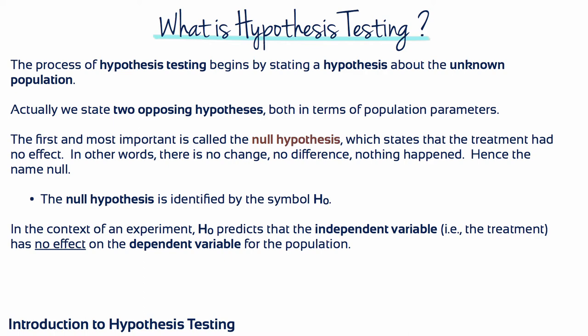The null hypothesis is identified by the symbol H0. In the context of an experiment, the null hypothesis predicts that the independent variable, i.e. the treatment, had no effect on the dependent variable for the population.